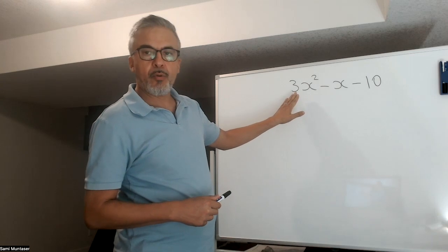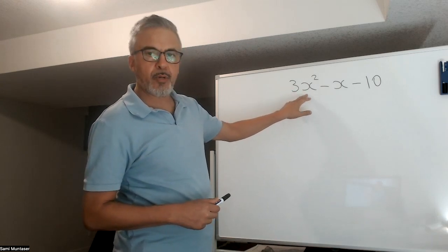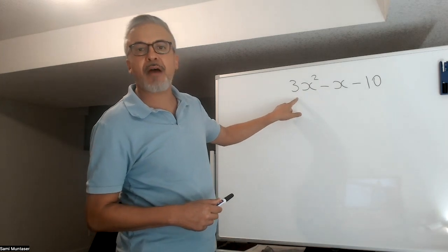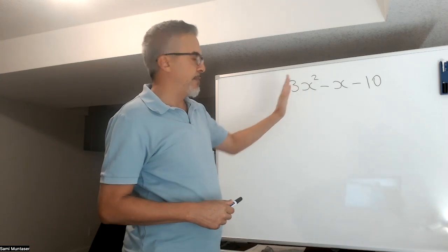As you know, and as you see here, there's a leading coefficient in front of the x squared. This makes the factoring a little bit more difficult than if you didn't have the leading coefficient.